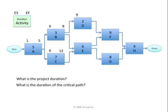The earliest activity D may begin is the day after activity B ends. Therefore, the early start of activity D is 9. If it runs 2 days — day 9, day 10 — the earliest it may finish is day 10. Activity E is a little trickier. Activity E may begin after both activity B and C have completed. I look at the early finish of B, which is day 8, and the early finish of C, which is day 12. 12 is higher. Therefore, the earliest E may begin is day 13.